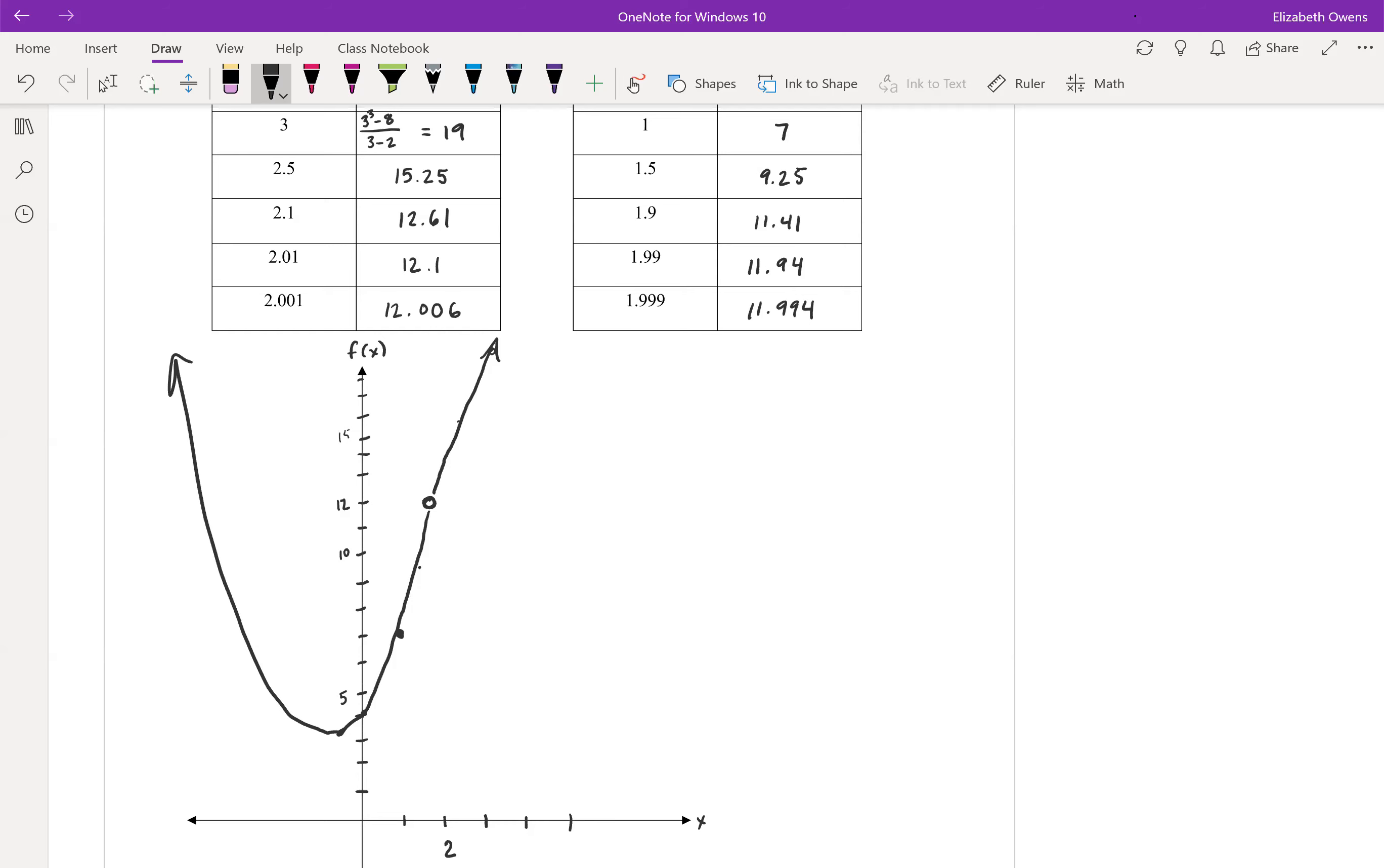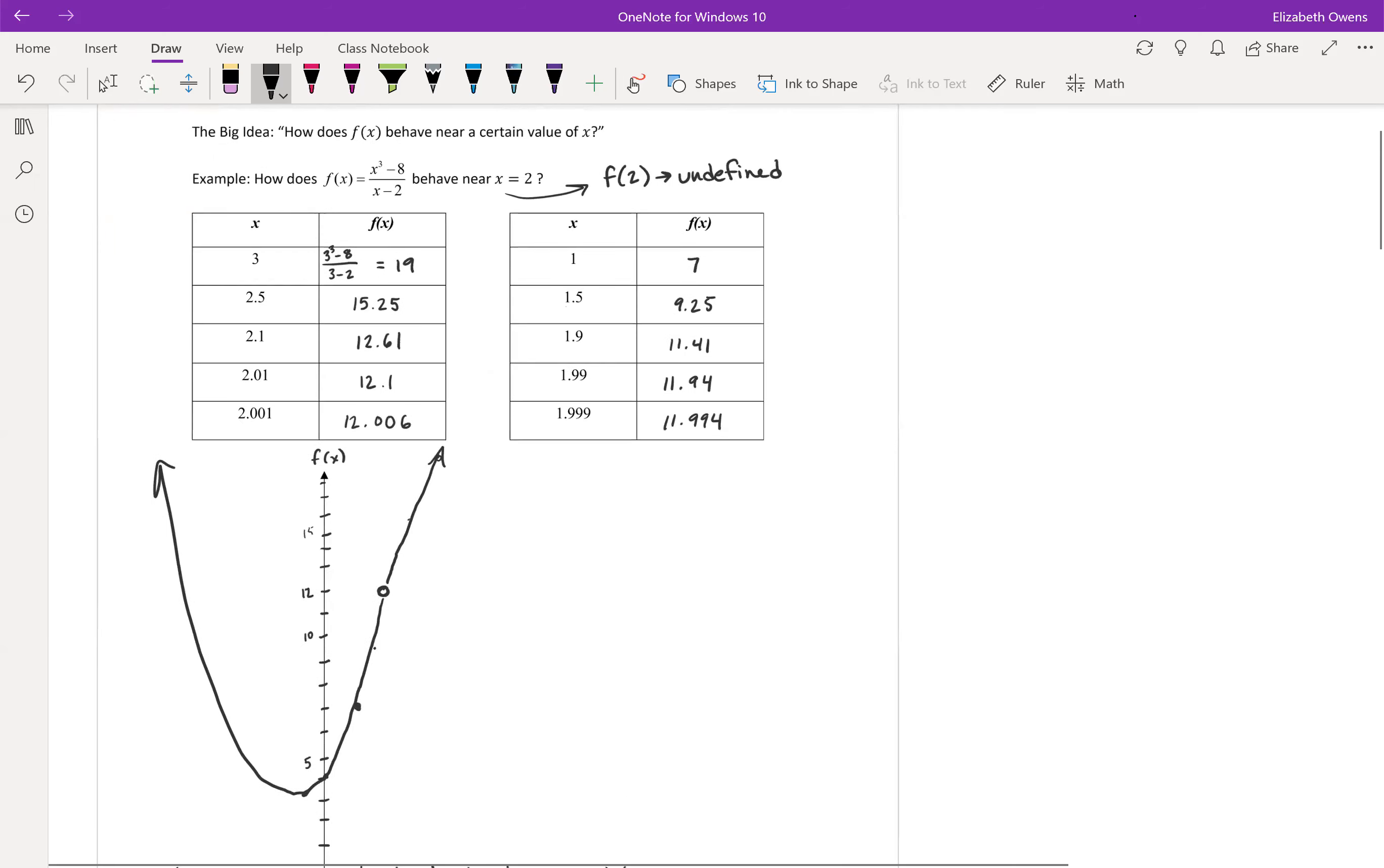But as far as answering our question, how does f of x behave near x equals 2? Well, the f of x values are approaching 12. As we come in from either direction, the f of x or y values here are all going toward the y value of 12.